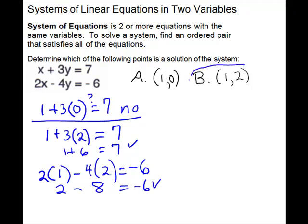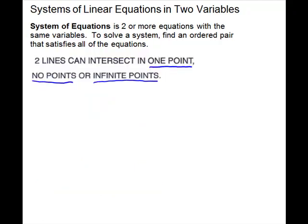Point B satisfies both equations, so it is a solution of the system. Two lines can intersect in 1 point, no points, or an infinite number of points. So we're going to have 3 types of solutions. The intersection is the solution — that is what makes both equations true at the same time.